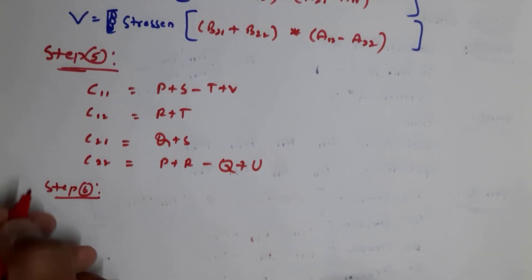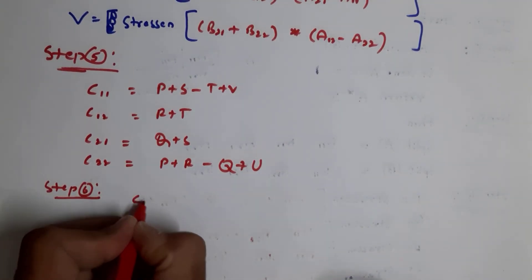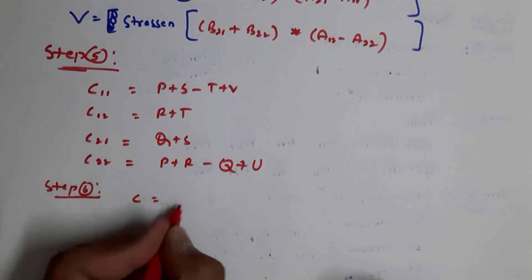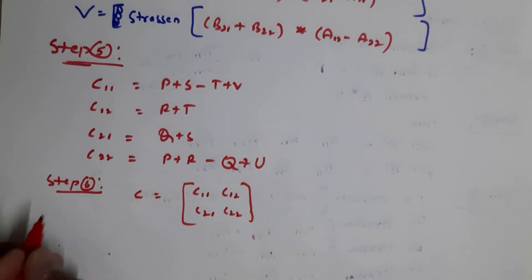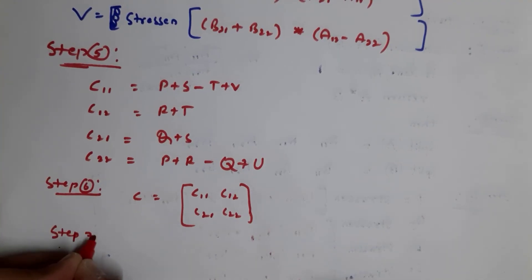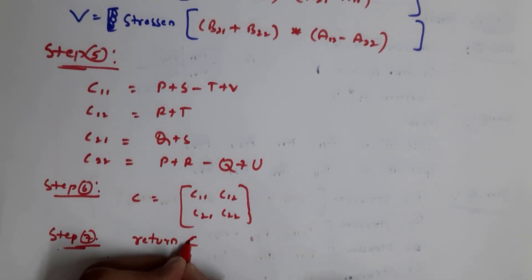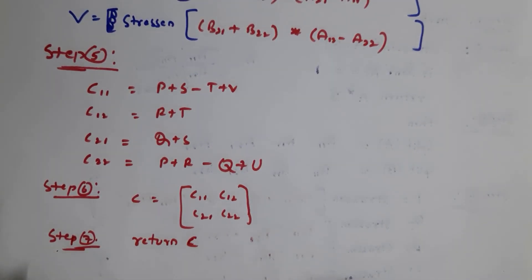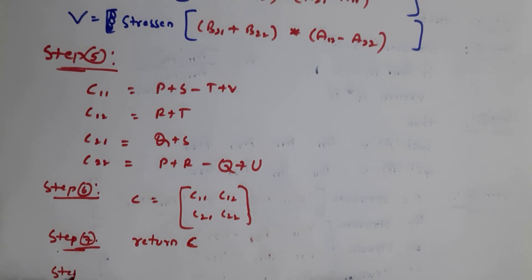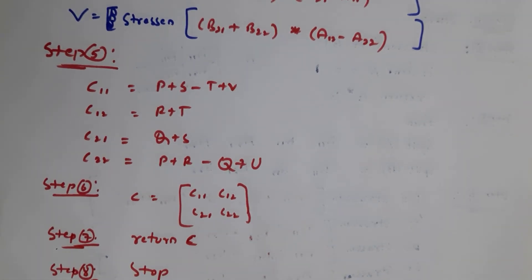Step 6: you will get the result of matrix C — that is C11, C12, C21, and C22. When you get the result of matrix C, you can stop. Step 7: return C, because this is the result, so we return C. Step 8 is Stop. This is Strassen's matrix multiplication algorithm.